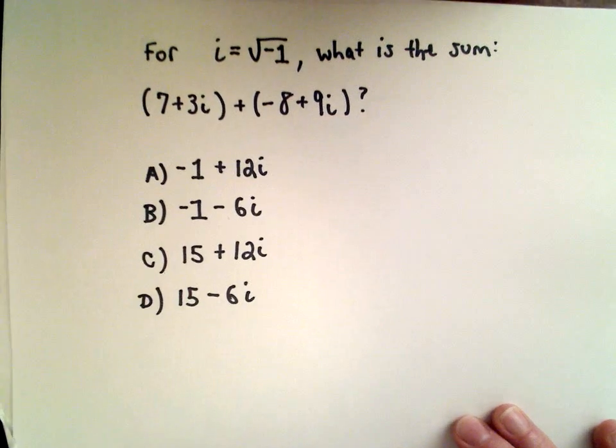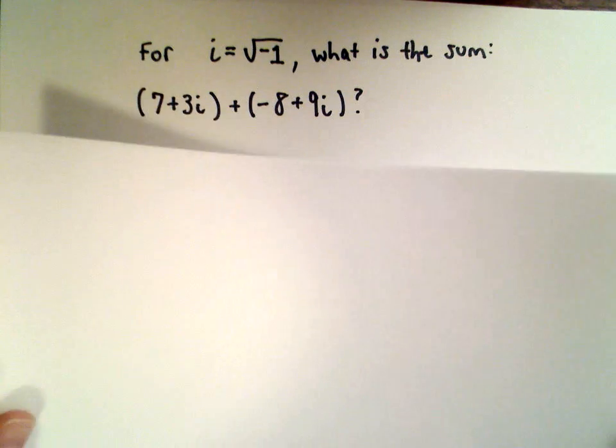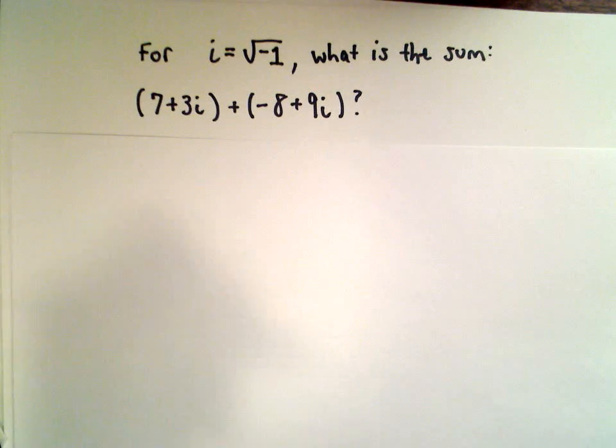So this deals with imaginary or complex numbers, but for all intents and purposes, that part where i equals the square root of negative 1 doesn't really matter for this problem. You can basically just treat the i almost like a variable and proceed like normal.